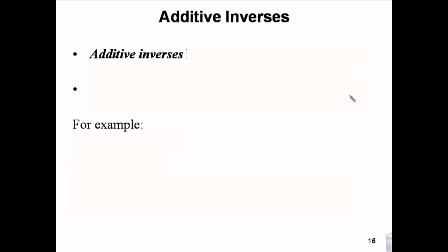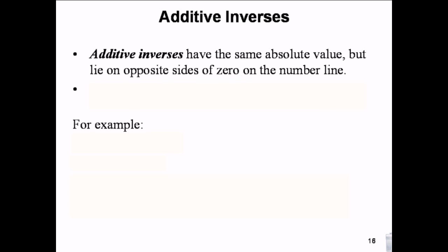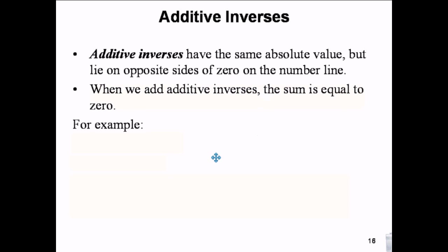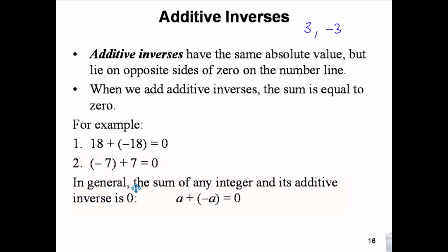This is one of the properties of real numbers: additive inverses. An additive inverse has the same absolute value but is on the opposite side of zero — they're just opposite numbers. For example, 3 and negative 3 are additive inverses, and if you add them together you get zero. 18 and negative 18 are opposites and equal zero. Adding any integer and its additive inverse always gives zero — they cancel each other out. This is the additive inverse property, which shows up on exams like the SAT and PERT.